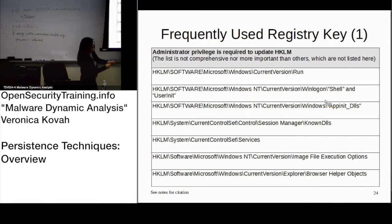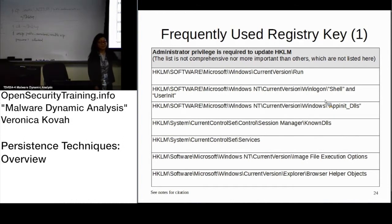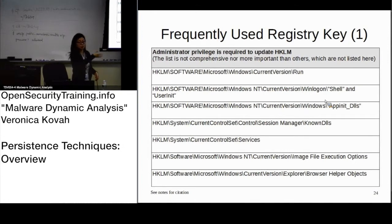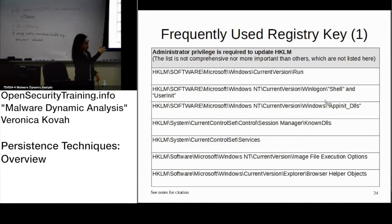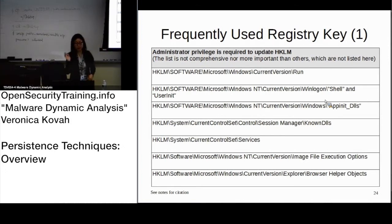Another one is Browser Helper Objects — these are nothing but ActiveX objects. You put the ActiveX in, and when Internet Explorer runs it will load those ActiveX objects at the same time, so you can basically run code through Internet Explorer. Any questions?